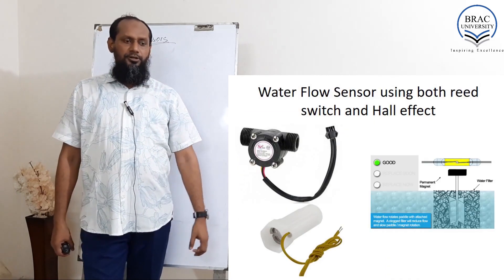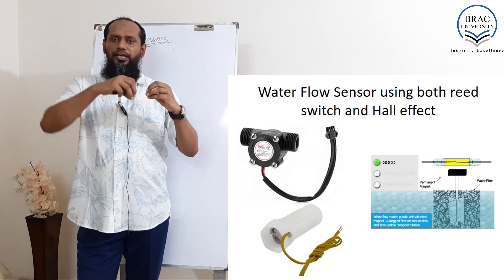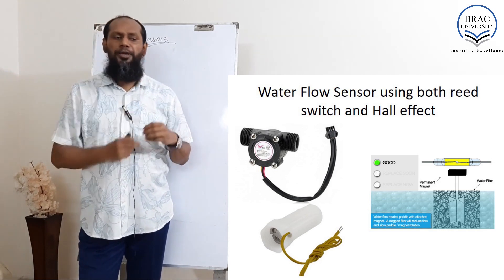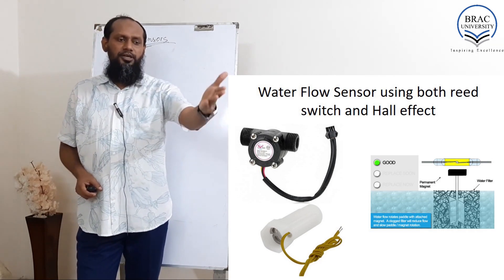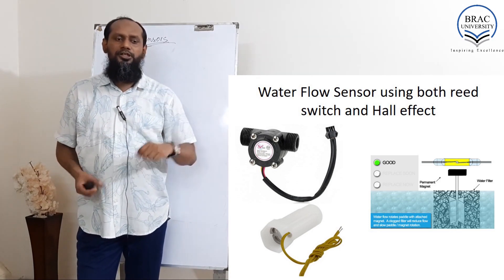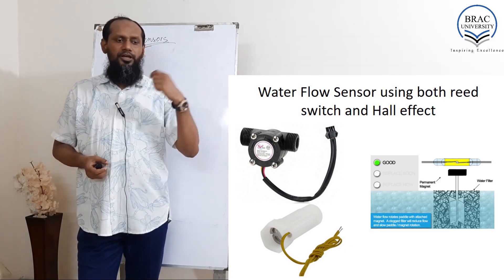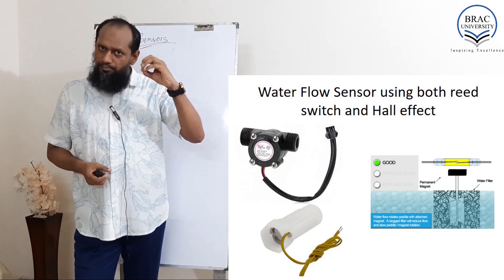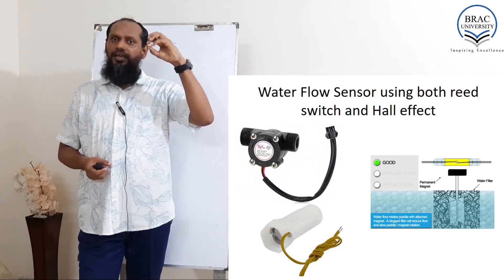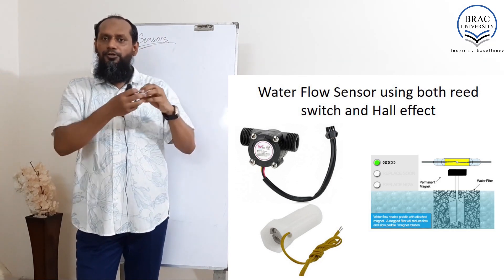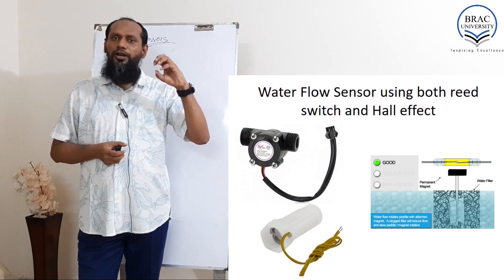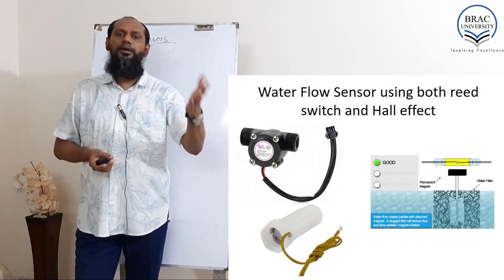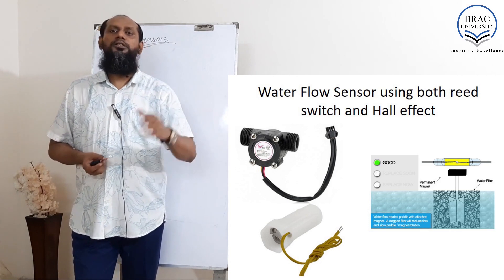The water flow sensor is very simple. When water flows, a fan inside spins. In one position it turns on the reed switch, and in the other position it turns off the reed switch. The faster it turns on and off, the higher the water flow. If it turns on and off very slowly, the water flow is slow. By using this technique we can measure the water flow. Hall effect can also be used in this type of sensor.